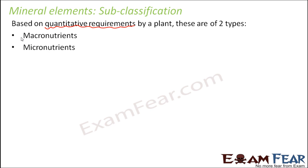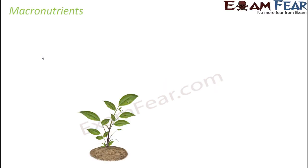The name itself suggests: macro means big and micro means small. So the elements which are required in large quantities are called macronutrients, and those required in small quantities are micronutrients. We will now discuss macronutrients and micronutrients in detail.